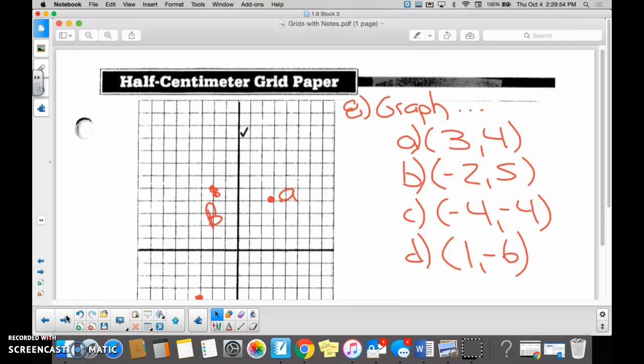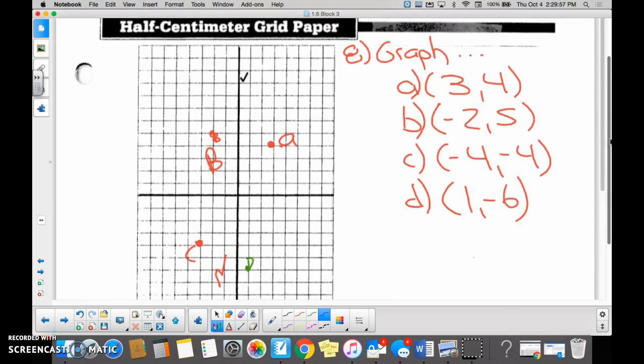And then are you guys able to graph a point like three, four? Yes. Where do you always start? Origin. In the sense it's a positive three, do we go right or left? Right. And then we go up or down? Oh my God, there we are. You all can handle that? Yes.